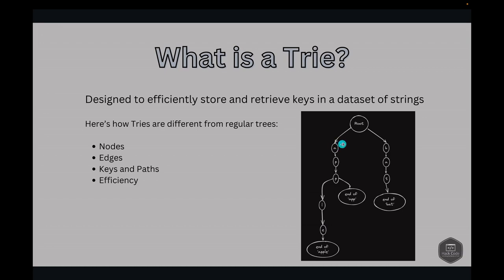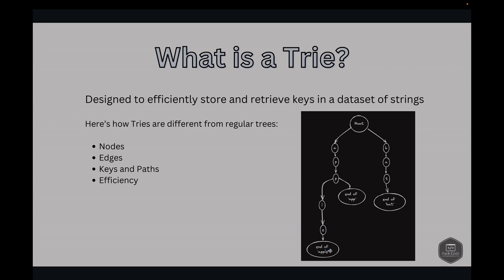Here is an example trie representation. Consider inserting the words apple, app, and bat into the trie. The root is the starting point. The word apple is represented by the path A-P-P-L-E, and we indicate the end of the word with a boolean marker. The word app is represented by the path A-P-P with an end-of-word marker, and bat is represented by the path B-A-T with an end-of-word marker.